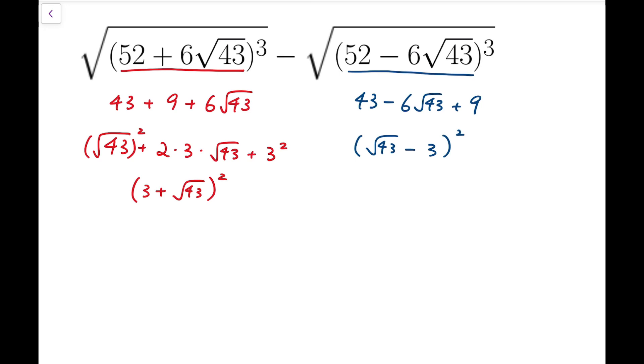Or you may say that as 3 minus root 43, but because we have to take square root at the end, so I'd rather have the number inside, under the square, to be a positive number. Now, moving on, we can actually compute the final answer.